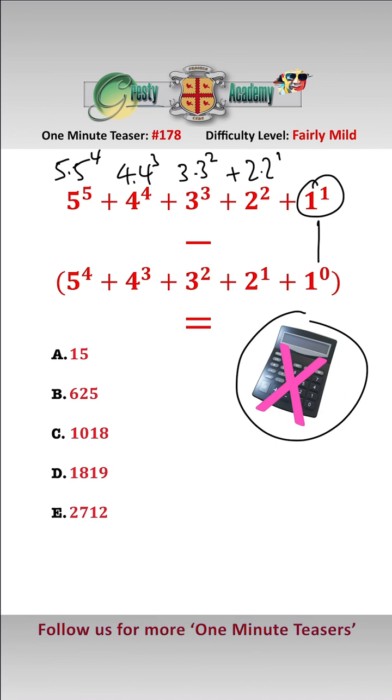And 1^1 is 1, take away 1^0, that cancels itself out.